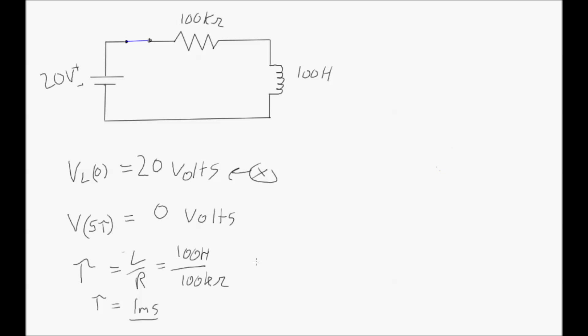The time constant equation is L over R, where L is the inductance in Henrys. In this circuit the time constant is 100 Henrys over 100 kilohms, giving a one millisecond time constant, or steady state after five milliseconds. So with capacitors voltage started at zero and rose to 20 volts; with inductors it starts at 20 and drops down to zero.